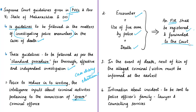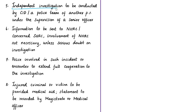The third guideline is that if a person dies in an encounter, the next of kin must be informed at the earliest. An intimation must also be sent to the police officer's family, and if they need a lawyer or counselling, such services must be offered. An independent investigation must be conducted by the Crime Investigation Department or a police team from another station, under the supervision of a senior officer at least one level above the head of the police party that engaged in the encounter.